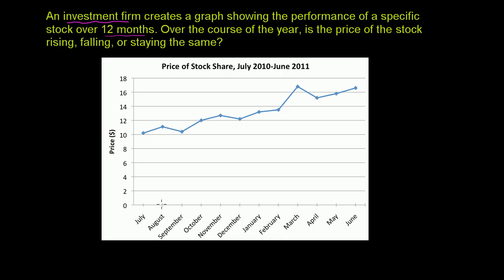So over this horizontal axis right over here, they have month by month, and we move forward in time — July, August, September, October. And on the vertical axis, we have the price.